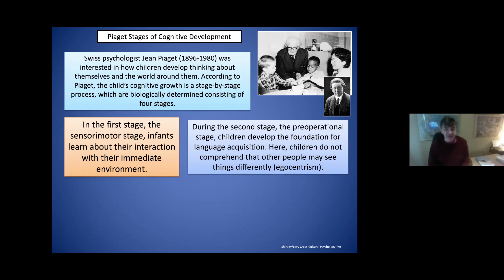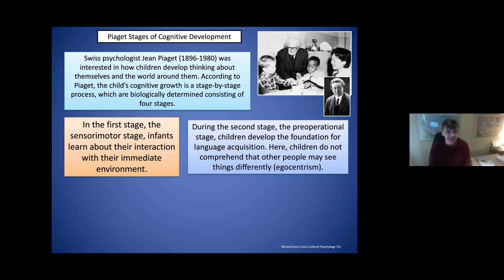The second stage is the pre-operational stage — the preschool period. The child develops a foundation of language acquisition, learning the basic structure of a language or languages. Here also is the period when the child learns to understand its own existence. However, the child has difficulty understanding other people's points of view. We call this egocentrism — not about being egotistic and nasty, but in child psychology it means the stage when the child believes she or he is in the center of the universe. It's difficult for them to understand another child's standpoint or to understand themselves from the outside world.